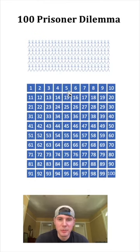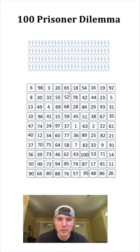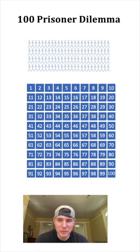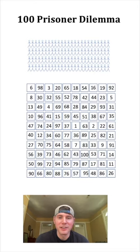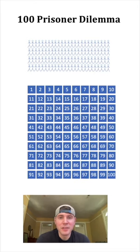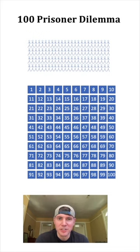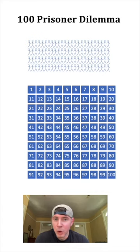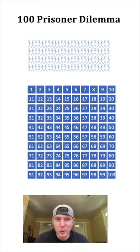For example, box number 5 has the number 65 inside of it and box number 46 has the number 1 inside of it. One at a time, they give each prisoner 50 guesses to find their box. And then when they're done, they leave and they can't talk to the other prisoners. If all the prisoners find their box, they all are set free. If one or more don't find their box, no one is set free.